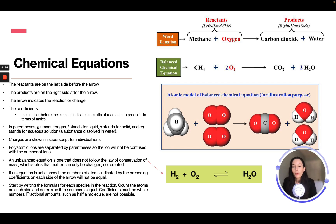So you want to start by writing formulas for each species in the reaction, count the atoms on each side, and determine if the number is equal. Coefficients will be whole numbers. Fractional amounts such as half a molecule are not possible. So we can see that up here, you may get this word problem: methane plus oxygen equals carbon dioxide plus water, and you can then write it out in this way.